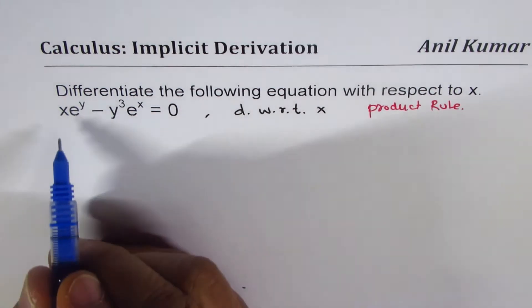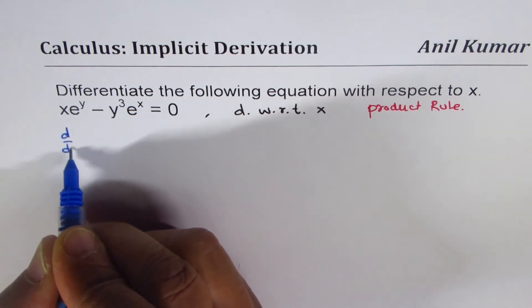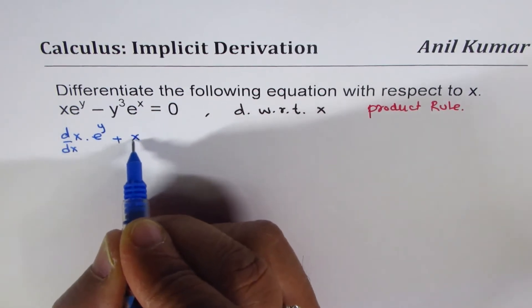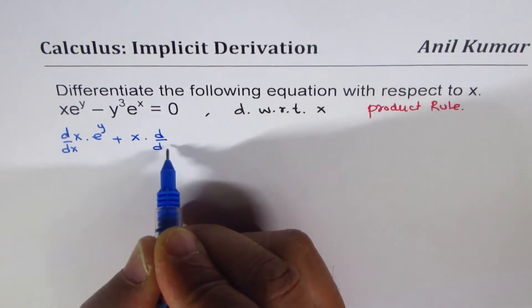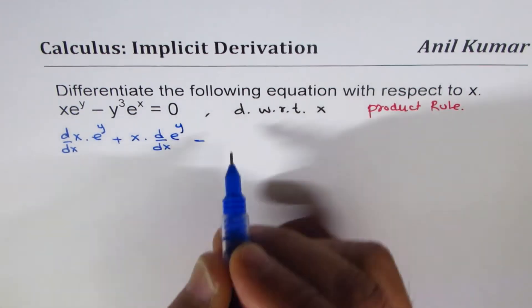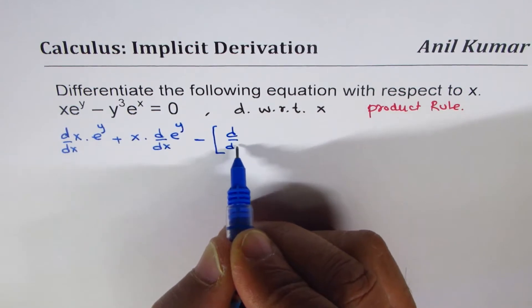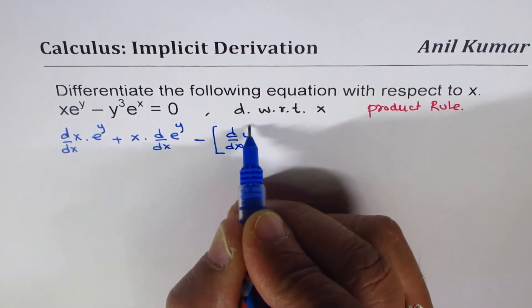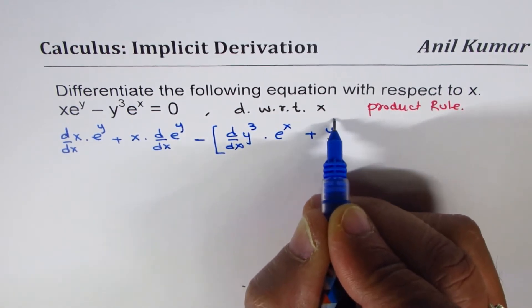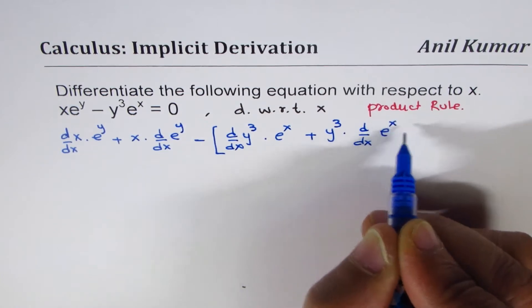So we can say derivative of the first function, which is x: d/dx of x times e to the power of y, plus x times d/dx of e to the power of y, minus — so we have d/dx of y cubed times e to the power of x, plus y cubed times d/dx of e to the power of x.